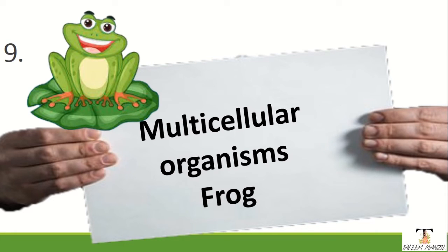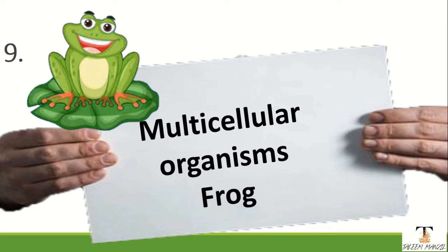This lesson covered unit one. We will talk about biology, its divisions and branches, the Quran and science, Muslim scientists, and the levels of organization — sub-atomic, atomic, molecular, cellular, tissue, organ, organ system, organism — and then the organism becomes a population, and the population becomes a community.